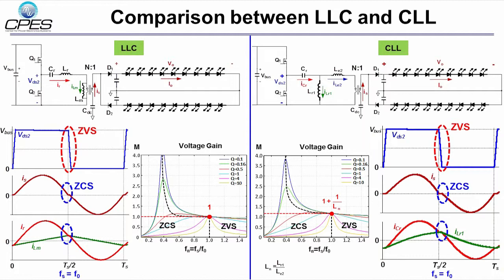Secondly, for CLL, during the dead time, the current flowing through LR1 instead of the magnetizing inductance is used for charging and discharging the junction capacitances of Q1 and Q2 to help them achieve ZVS.